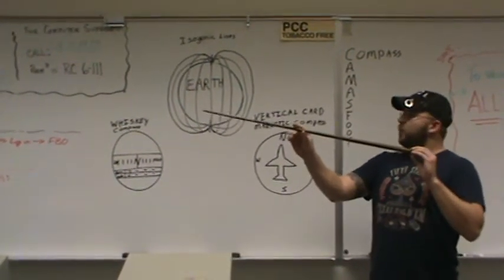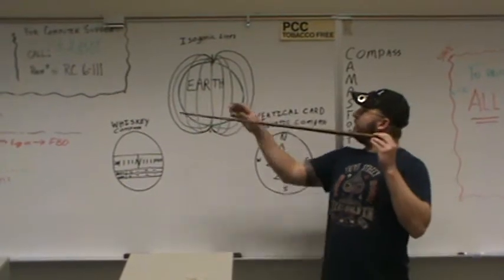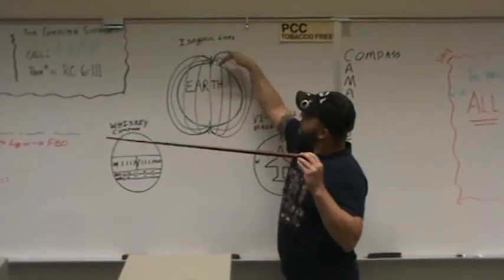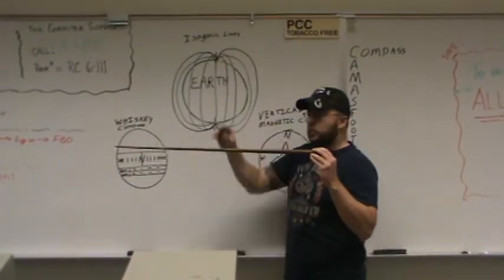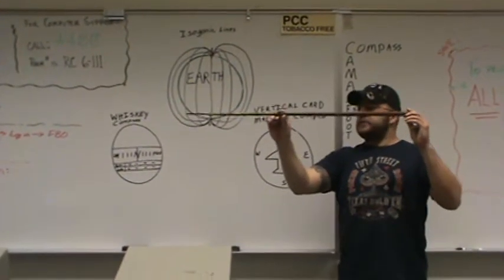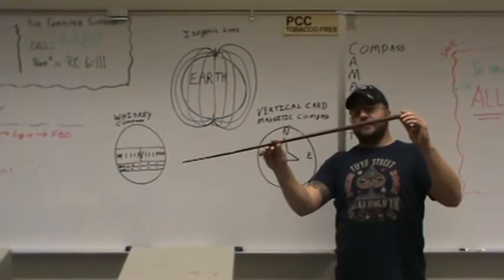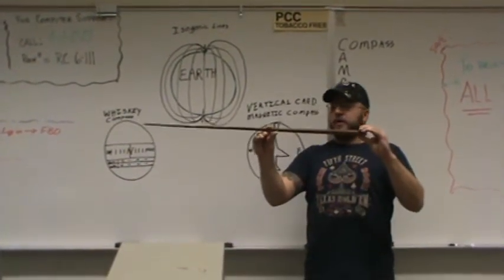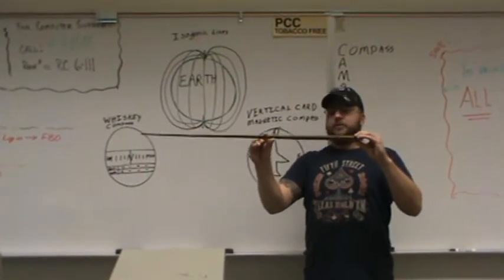So, if we didn't have that weight, because we are up here in the northern hemisphere, you can see how these lines tend to have pulling down towards the poles. What would happen is it would pull your north side of your needle down. So we put the weight here to compensate for that to where then it is always laying flat.